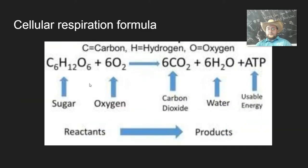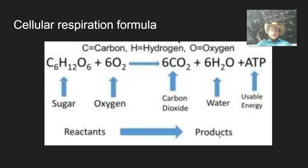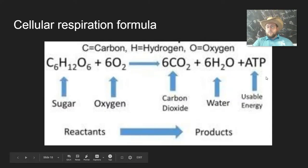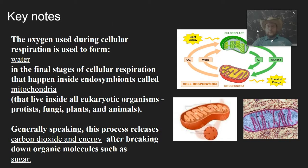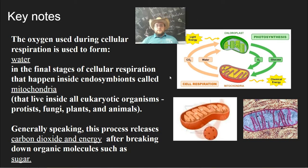Meanwhile, the oxygen is used to make another waste product, which is water. The actual formula shows the chemicals involved: sugar and oxygen are the reactants, and carbon dioxide and water are the products. Those wastes are actually what photosynthesis needs — we'll talk about that in a second. The key point is making ATP, that useful energy.